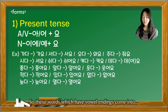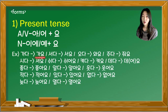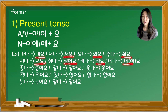Words with vowel endings take the following forms: 가요, 서요, 와요, 줘요, 봐요, 쉬어요, 켜요, 돼요 or 되어요.